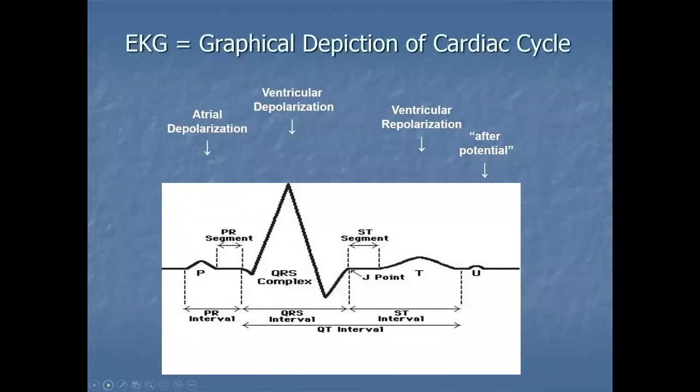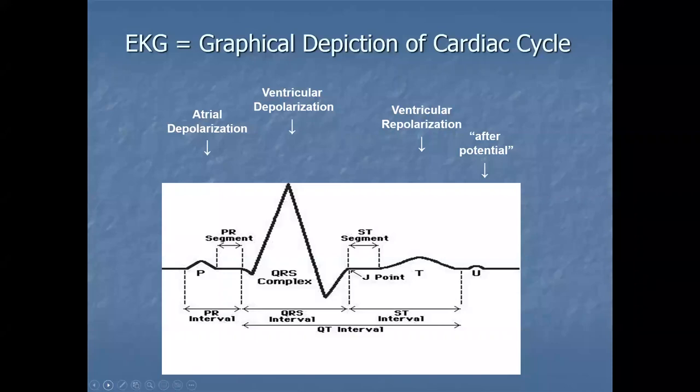Looking at the ECG graphical depiction: the P wave correlates to atrial depolarization — the top of the heart contracting. The QRS correlates with ventricular depolarization, the big squeeze from the ventricles to eject blood. The T wave relates to ventricular repolarization — the recharge. The U wave relates to what they call an after potential; in some cases you can't even see U waves.